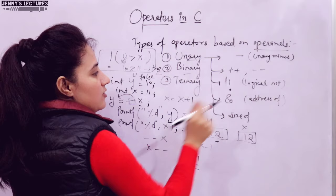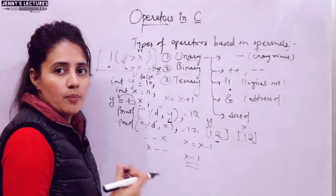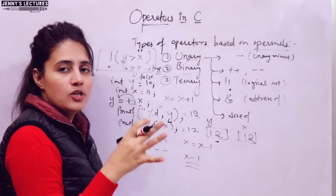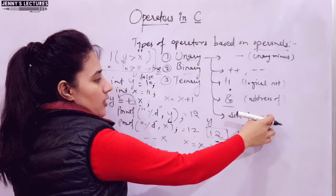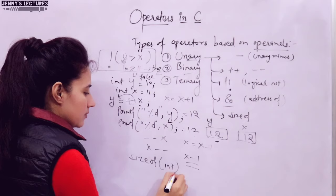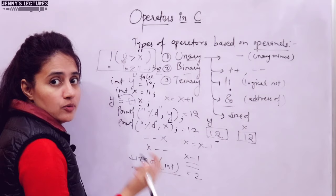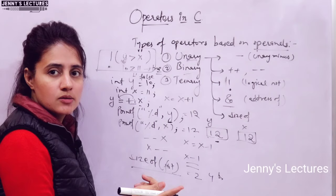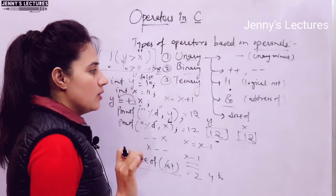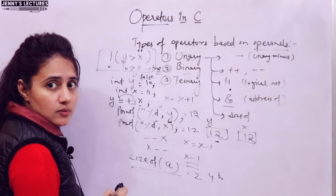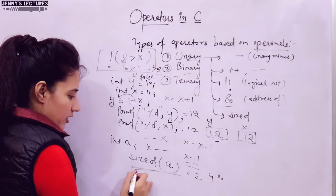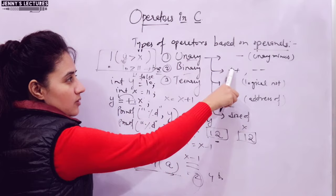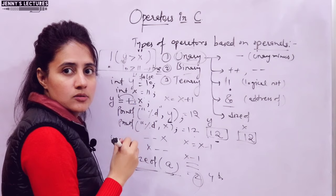The address-of operator fetches the memory address of an operand. We generally use it in the scanf function or when working with pointers. The sizeof operator gives the size in bytes of a given data type or variable. For example, sizeof(int) gives 2 or 4 bytes, sizeof(float) gives 4 bytes. You can also use it with a variable: sizeof(a) where a is int will give 2 bytes.